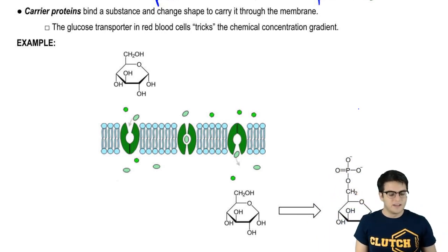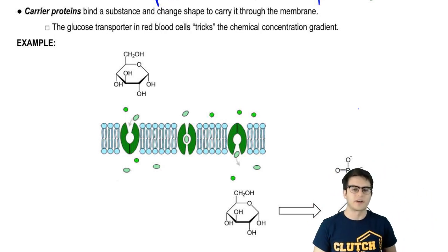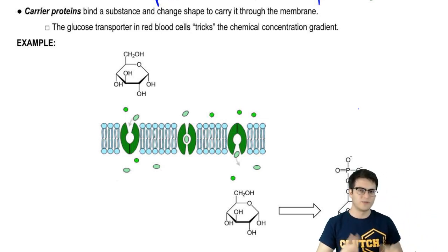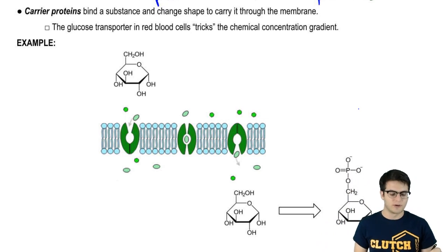But some carrier proteins actually kind of trick the concentration gradient. You see, cells are smart, and they know little tricks to fool physics in order to gain an advantage. So the glucose transporter that's used in red blood cells is an example of one of these tricks.